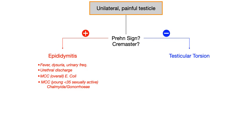This is a test favorite. Look at the wording of the question on Step 2 and Step 3. If it says most common cause, the answer is E. coli. If it says most likely cause and the person is less than 35 years of age, you want to pick chlamydia or gonorrhea. Again, this is just extra, but I'm putting it here for completeness sake.